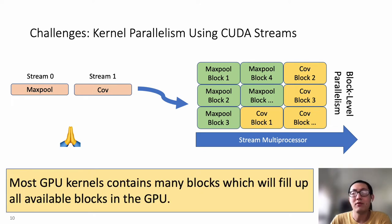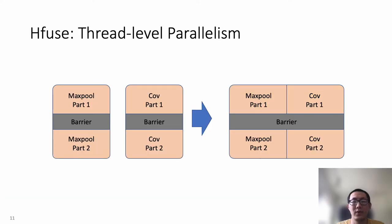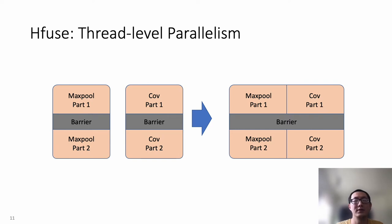Now we have the question: can we force two kernels to be launched within a block and achieve thread-level parallelism? To solve this problem, we propose horizontal fusion. Similar to traditional kernel fusion techniques, horizontal fusion takes two kernels as input and returns a fused kernel. Unlike traditional kernel fusion, which runs two input kernels sequentially, horizontal fusion runs two input kernels in parallel by separating threads into two groups and launching each kernel using the corresponding threads.